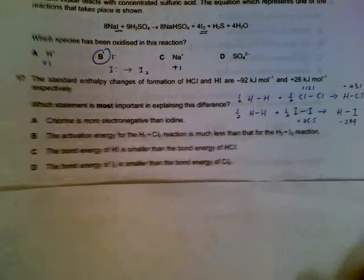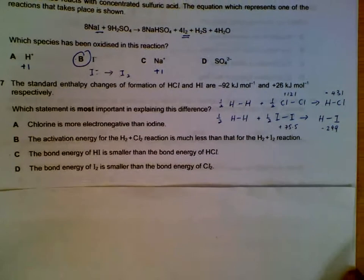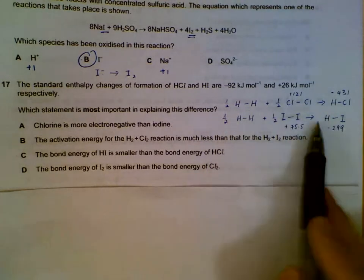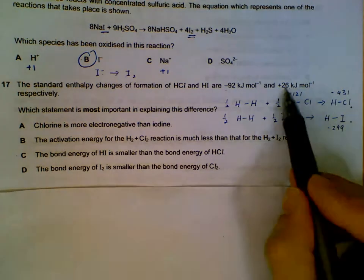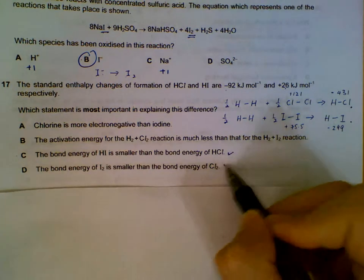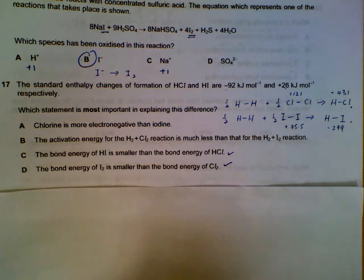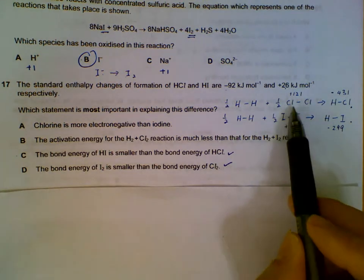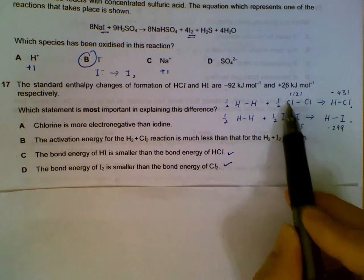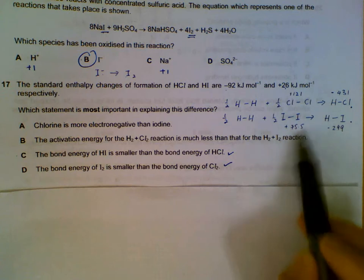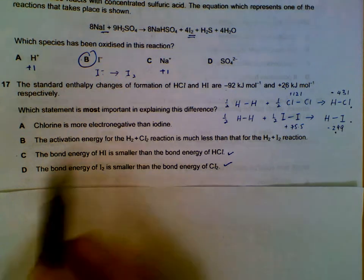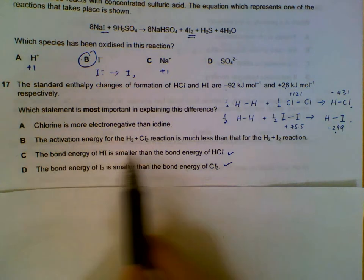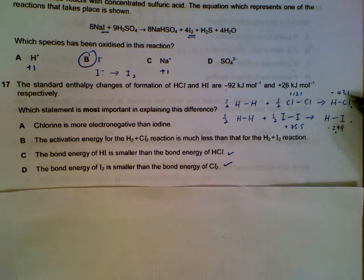Question 17: Enthalpy of formation of hydrogen chloride and hydrogen iodide. Writing out the equations, it is given that ΔH = −22 kJ mol⁻¹, making HCl more exothermic than HI. Focusing on bond energies from the data booklet: Cl₂ is 242 kJ mol⁻¹, so half gives 121 kJ mol⁻¹. The bond energy of H–I is smaller than the bond energy of H–Cl — this is true.